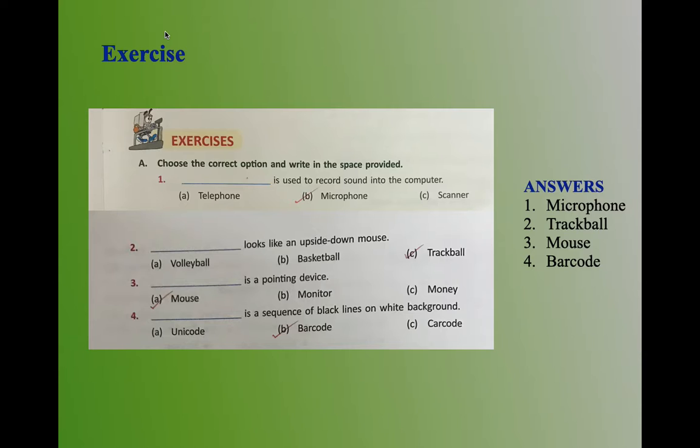Third question: Dash is a pointing device. The answer is A, mouse. Fourth question: Dash is a sequence of black lines on white background. The answer is B, barcode.